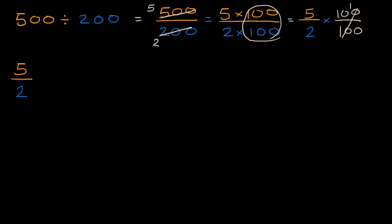we can rewrite five halves as a mixed number. So five halves is going to be equal to, well, how many times does two go into five? Well, it goes two times and then you have one half left over. So this is going to be two and one, two and one half.